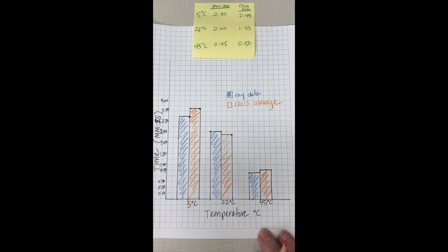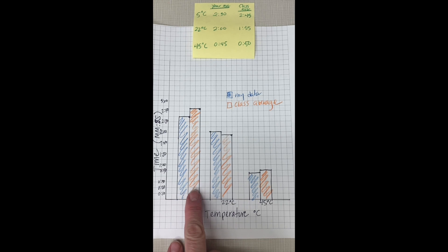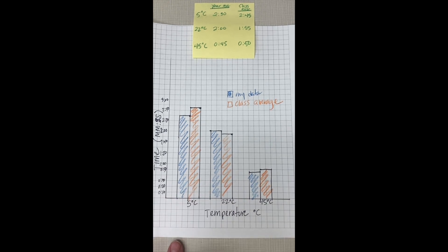So that's how to make a quick and easy bar graph comparing the three temperatures with separate data from your average versus the entire class average. And there you go. If you have any questions about how to make a better graph or what your teacher's expectations are, make sure you're in contact with them about this.